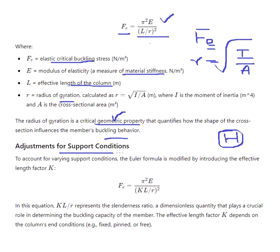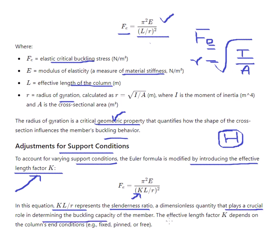To account for varying support conditions, the Euler formula is modified by introducing an effective length factor K. K is purely for accounting for varying support conditions. KL/R represents the slenderness ratio, a dimensionless quantity that plays a crucial role in determining the buckling capacity of a member. The effective length factor K depends on the column's end fixity conditions.